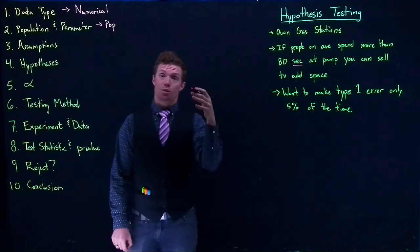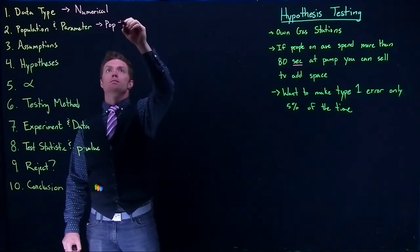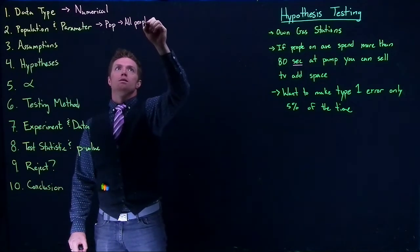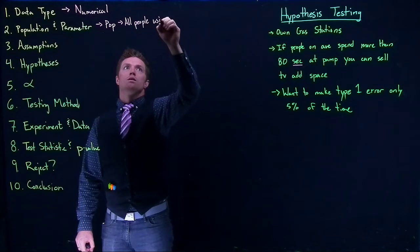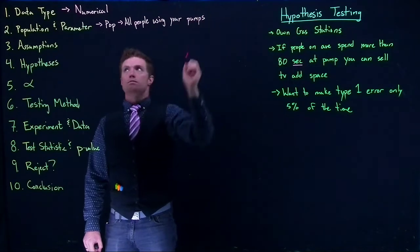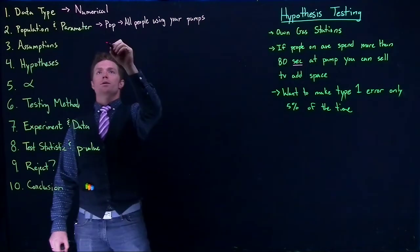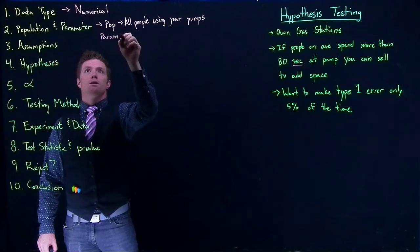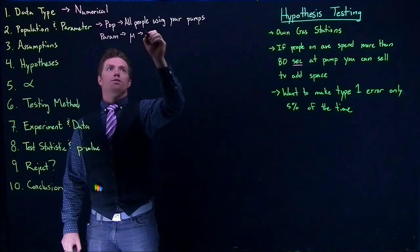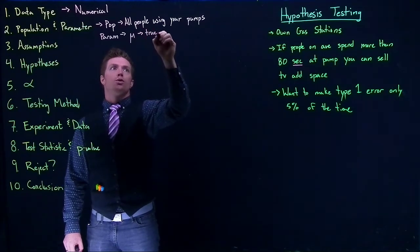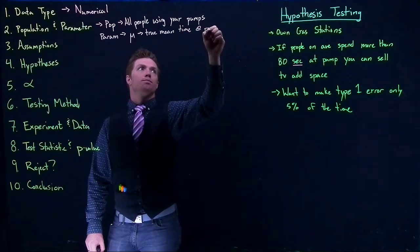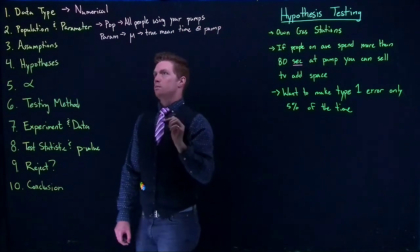We're measuring people at your pumps — all people using your pumps. And then the parameter that we're interested in is going to be mu, the true mean time at the pump.